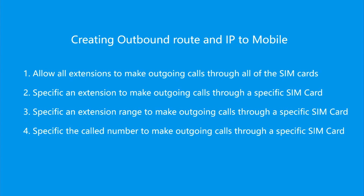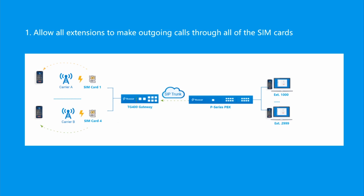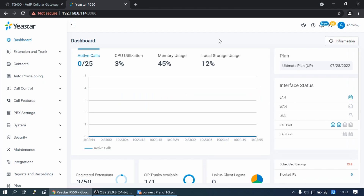Part 2: Creating Outbound Route on P-Series PBS and IP-to-Mobile on TG Gateway. In this section, I will show you four scenarios. Scenario 1: Allow all extensions to make outgoing calls through all of the SIM cards. Step 1: Creating an Outbound Route on P-Series PBS to allow extensions to reach the TG Gateway.